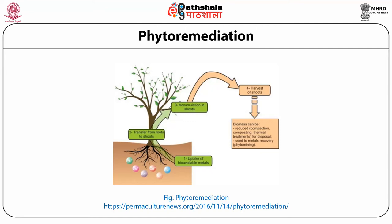This picture shows the process of phytoremediation. When the plant grows, it uptakes the bioavailable material from the soil, then transfers it from the root to the shoot, and accumulation is done in the shoot or leaf part. These parts of the plant are then harvested, and the biomass can be reduced by compacting, composting, or thermal treatment, or disposed of through metals recovery or phytomining.